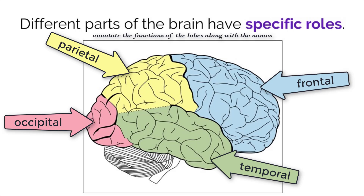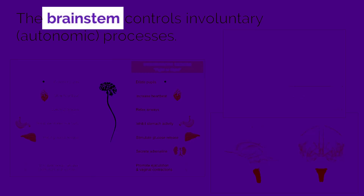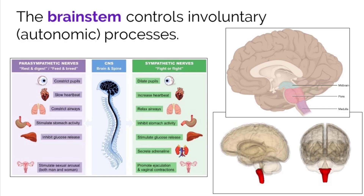Additionally, the cerebellum manages unconscious motor functions of the brain, such as balance and movement coordination. The brain stem controls involuntary processes in the body. This system is called the autonomic nervous system and functions without us cognitively having to think about it.